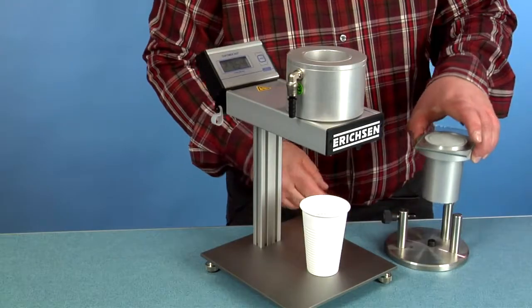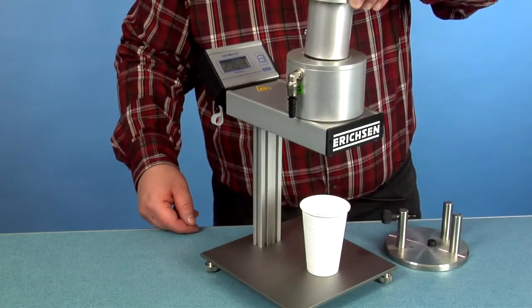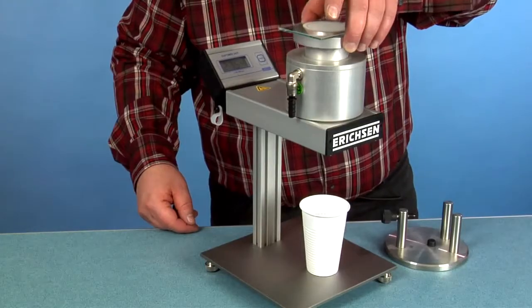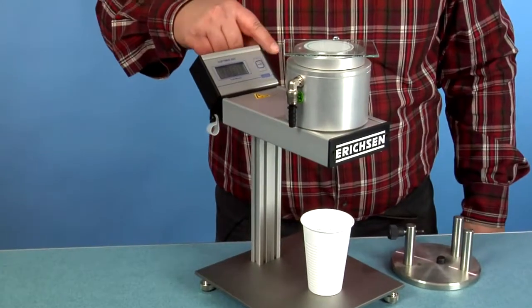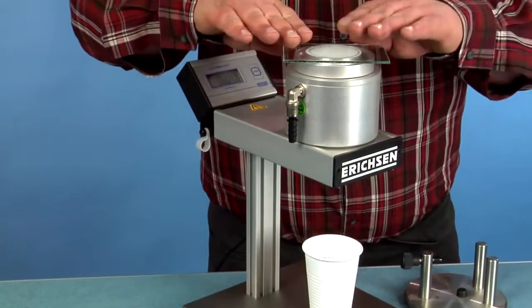Remove the flow cup from the filling support stand and insert it into the temperature jacket. After tempering, press the reset button and remove the glass plate. The counter starts automatically.